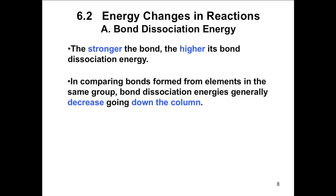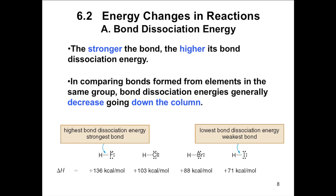For example, in the series of hydrogen fluoride, hydrogen chloride, hydrogen bromide, and hydrogen iodide, hydrogen is bonded to the first four elements of Group 7A — the halogens. Bond dissociation energies decrease down the column from hydrogen fluoride to hydrogen iodide. Hydrogen iodide has the weakest of these four bonds because the valence electrons used by iodine to form the H-I bond are farther from the nucleus than those in bromine, chlorine, or fluorine. Similarly, hydrogen fluoride has the strongest bond because fluorine's valence electrons are closer to the nucleus than those in chlorine, bromine, or iodine.